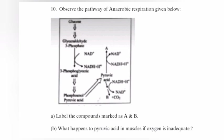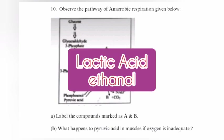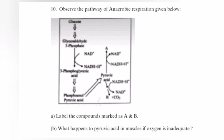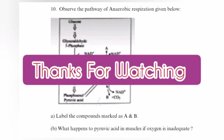Answer: A is lactic acid, B is ethanol. Question 10B: What happens to pyruvic acid in muscles if oxygen is inadequate? Answer: Pyruvic acid is converted into lactic acid.